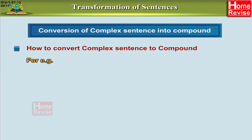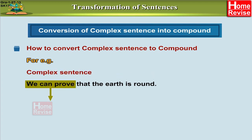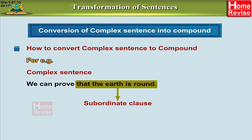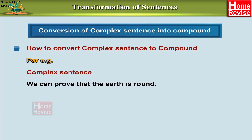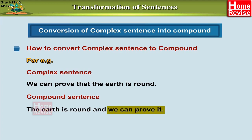Let's take another example: 'We can prove that earth is round.' This is a complex sentence wherein 'we can prove' is the main clause and 'that the earth is round' is the subordinate clause. When converted into a compound sentence, it becomes: 'The earth is round and we can prove it.' We now have two distinct clauses — 'the earth is round' and 'we can prove it' — both combined with the conjunction AND.